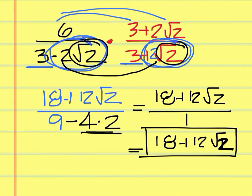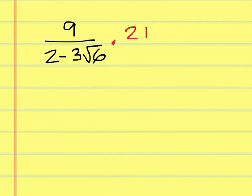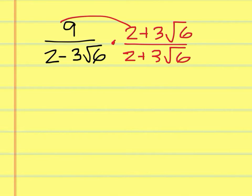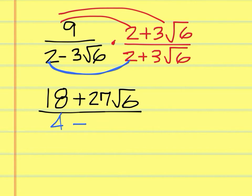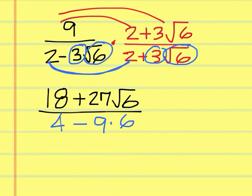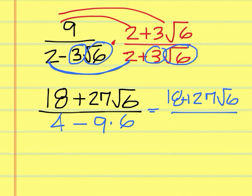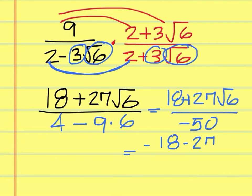We have to multiply the top and the bottom by 2 plus 3 square root of 6. We come up with 18 plus 27 square root of 6 on the top. On the bottom, 2 times 2 is 4, and then 3 times 3 is 9, and square root of 6 times itself is 6, giving us 9 times 6 equals 54. So the bottom is 4 minus 54 which is negative 50. We change the sign of everything to come up with negative 18 minus 27 square root of 6 over 50. That is your final answer.